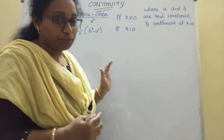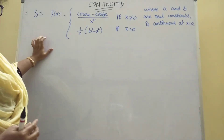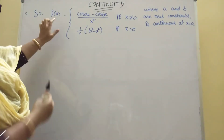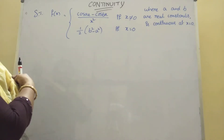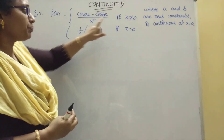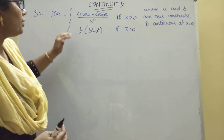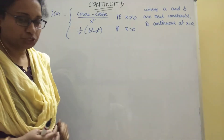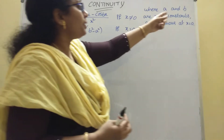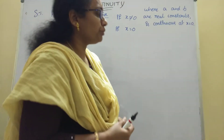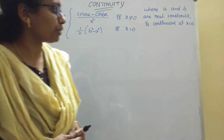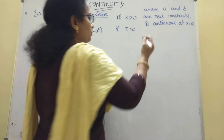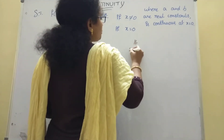Now, the problem: show that f(x) = (cos ax - cos bx) / x² if x ≠ 0, and f(0) = (1/2)(b² - a²) if x = 0, where a and b are real constants, is continuous at x = 0.